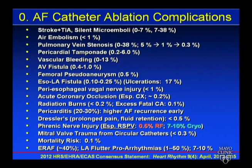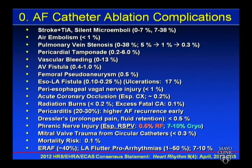In addition to esophago-atrial fistula, you can get damage to the vagal nerve as it tracks down the esophagus. We've seen cases of mega stomach and poor peristaltic function in the GI tract as a consequence of vagal nerve interruption into the GI tract during posterior LA ablation — like phrenic nerve injury, it's transient but can lead to significant morbidity for multiple months.